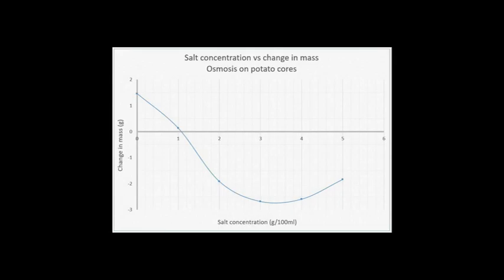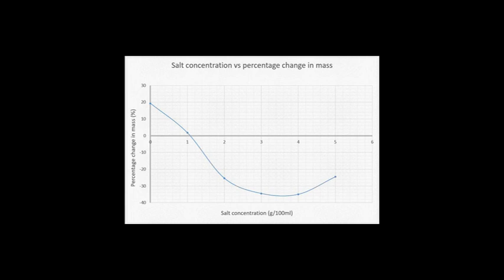This is a graph of salt concentration versus change in mass over 24 hours. You can clearly see there is a relationship between the salt concentration and the change in mass of cores. The higher the salt concentration, the more the water was lost by the potato cores. The cores which were in the 5g salt solution did not behave as I expected. These things do happen during investigations. A similar graph is expected if you are graphing salt concentration versus percentage change in mass after 24 hours.